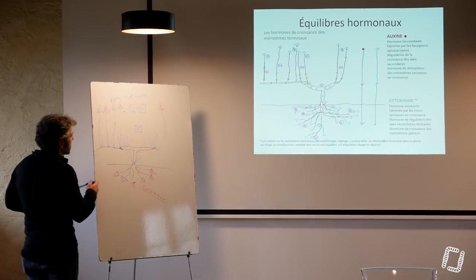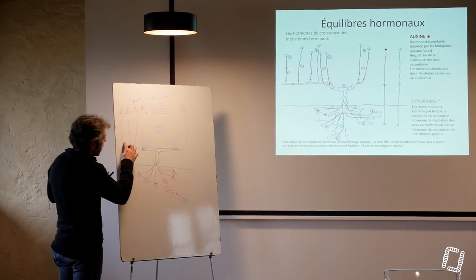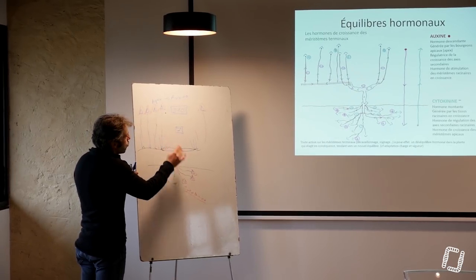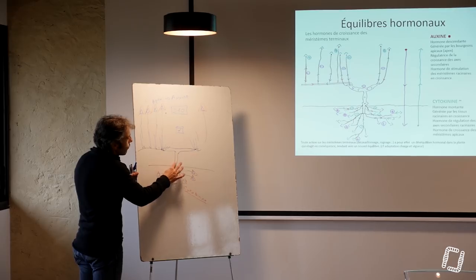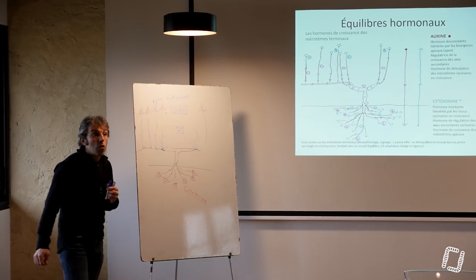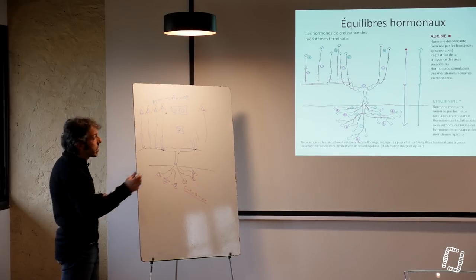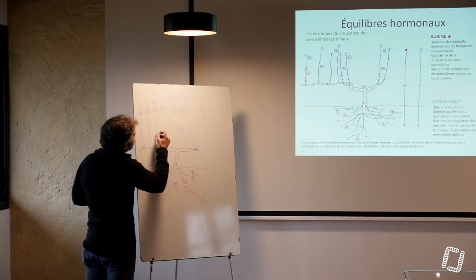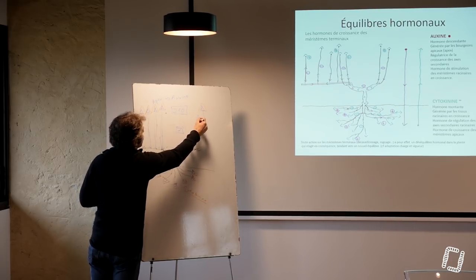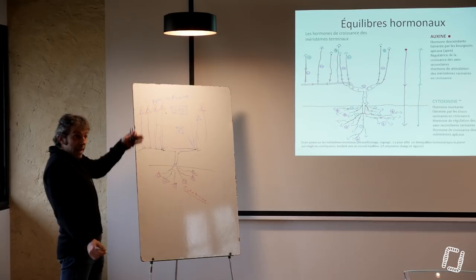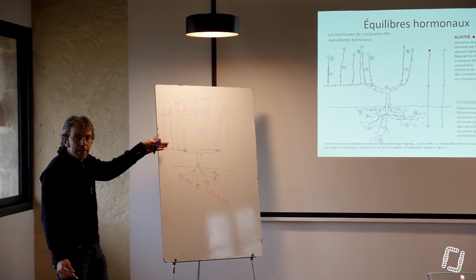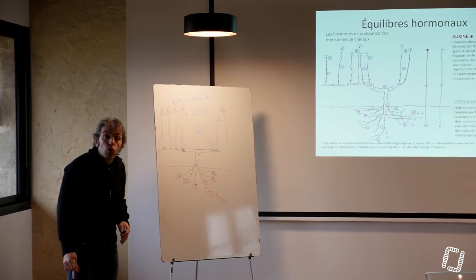Je dis ça parce qu'une fois qu'on a sélectionné nos pampres, enlevé tous ceux qu'il y avait en trop et qu'on se retrouve au bout d'un moment avec juste ce qu'il nous faut, ça repampre un petit peu si on a des plantes dynamiques, mais pas forcément si on n'a pas des plantes très dynamiques. Et puis, les sarments retrouvent une dynamique suffisante et refabriquent suffisamment d'auxine pour équilibrer entre l'énergie, entre les racines et la partie aérienne. Et au bout d'un moment, ça s'arrête de pamprer.